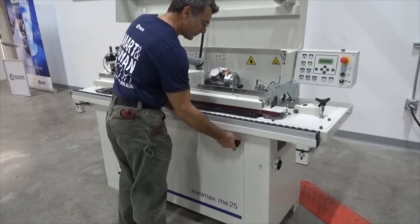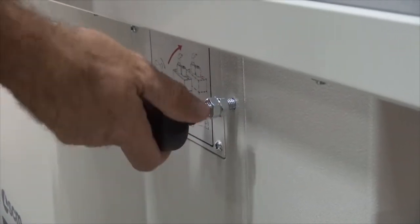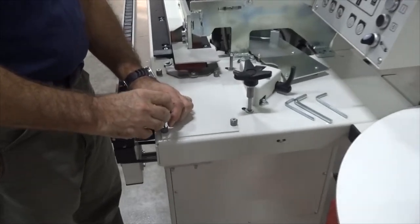Loosen this knob counterclockwise until it won't turn any further. This frees the oscillating glue spreader so that it applies glue to the edge of a panel.